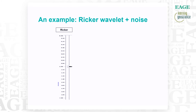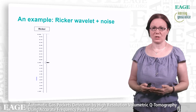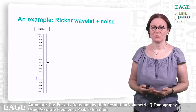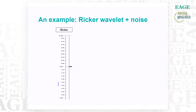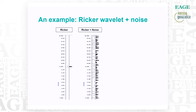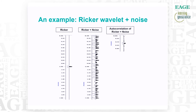Let's check the validity of our approach on a synthetic example to show why autocorrelation is key to computing reliable effective Q values. Here we have a Ricker wavelet and then the same Ricker wavelet where we added high-level noise, along with the autocorrelation of the noisy wavelet. As you can see, the wavelet obtained with the autocorrelation looks similar to the Ricker wavelet without noise.